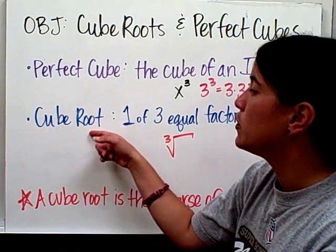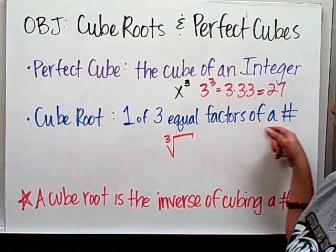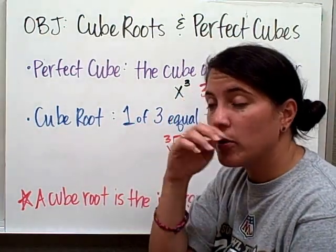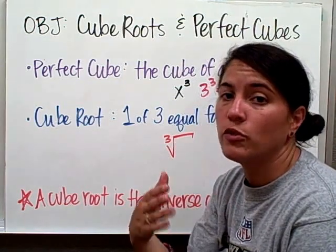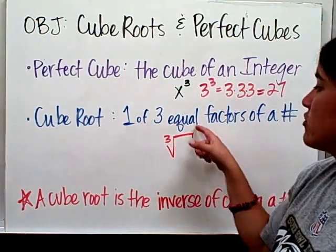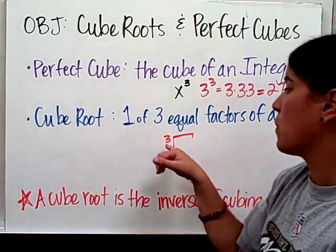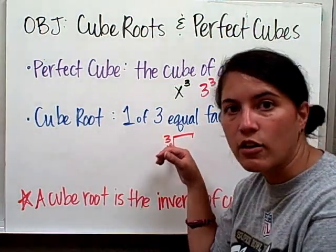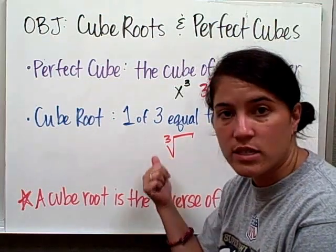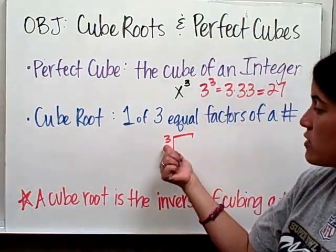A cube root is one of three equal factors of a number. So yesterday or before, a square root is one of two equal factors. A cube root is one of three because there are three numbers. So it's one of three equal factors. And we denote it by a square root with a little 3 right here. That's how you know the difference between a square root and a cube root. A square root doesn't have the 3. A cube root is going to have a 3.